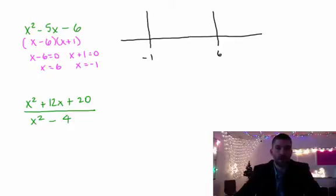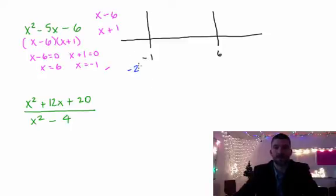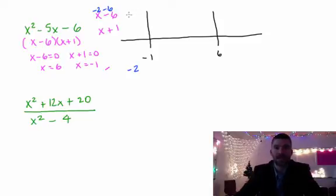Once you have your number line ready, put (x minus 6) and (x plus 1) — the two factors — over on the left. Then we're going to pick a number less than negative 1, say negative 2, and plug it in. I'm going to do negative 2 minus 6. I don't care what the actual number is — I only care about the sign. In this case the sign is negative, so I note that.